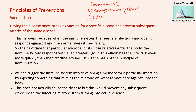Vaccination will safeguard us against microbial infection. Having a disease once or taking a vaccine for a specific disease can prevent subsequent attack of the same disease. This happens because when the immune system first sees an infectious microbe, it responds against it and then remembers it specifically. For example, once you have chickenpox, for the rest of your life you will not get chickenpox again. Your immune system remembers how to kill or control that specific microbial infection, so next time you are exposed, it will be very minor or go unnoticed.